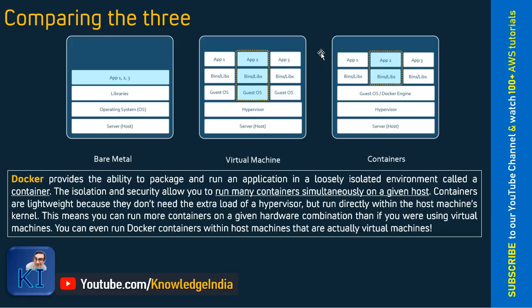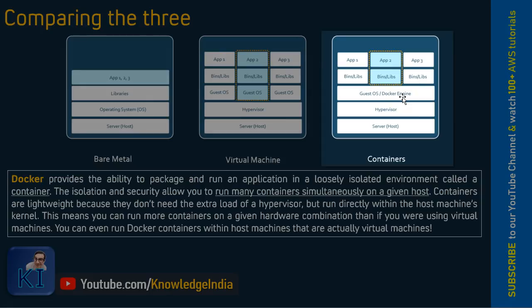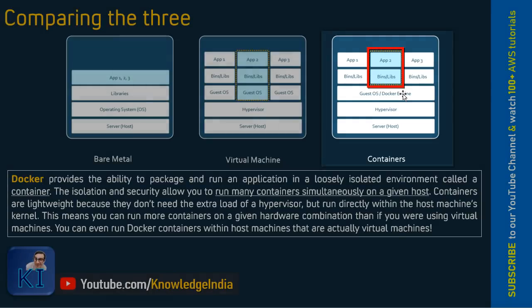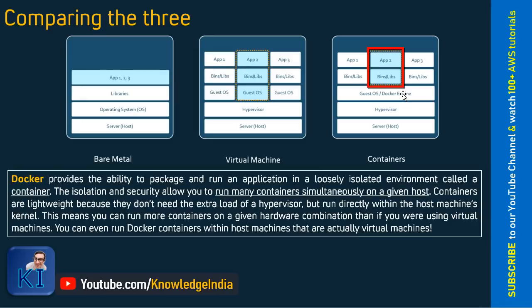When we come to containers, it goes one level further. You need not run a guest operating system for every application. Rather, on one guest operating system — think of it as your Linux, Amazon Linux or RHEL — there can be smaller packages which are called containers. In every container, necessary libraries and the application code can be put. Whatever you are seeing in the third picture on the right-hand side, this particular thing is one container.